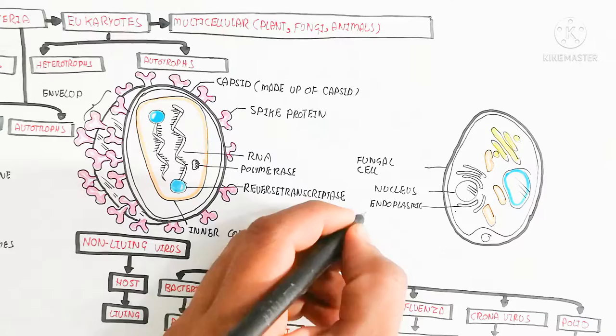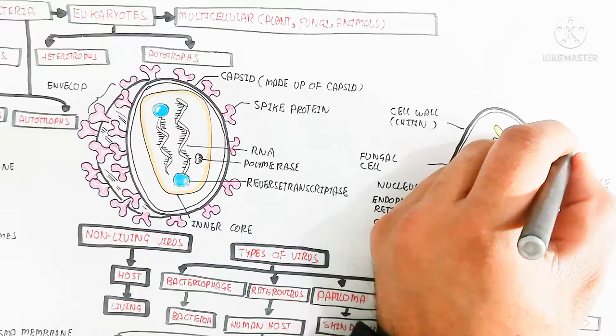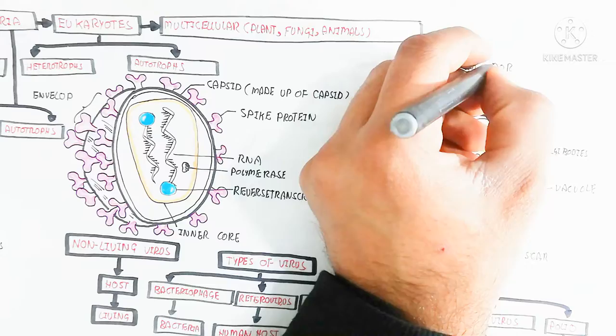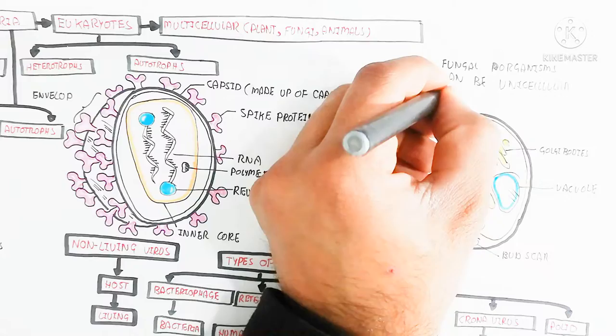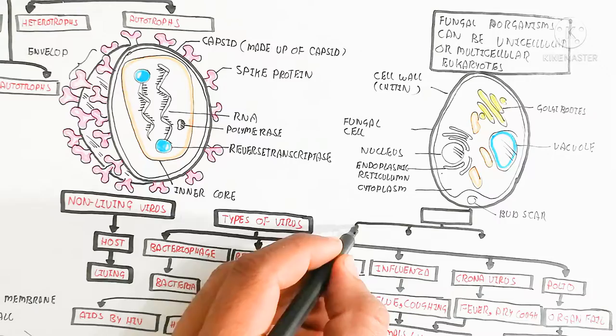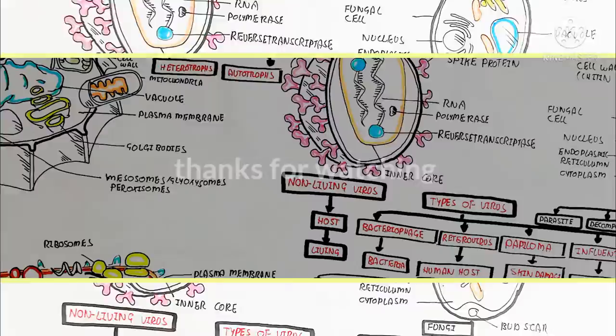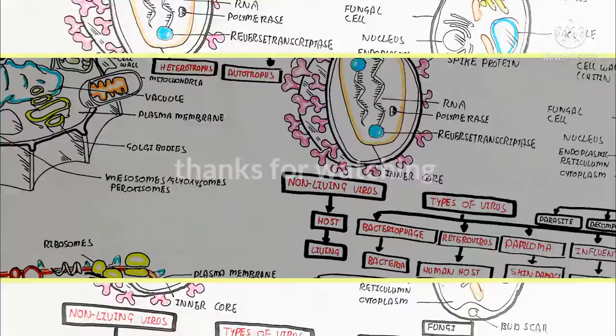Here is the fungi — the fungal cell is unicellular in the case of yeast, while multicellular in the case of mushroom. The cell wall is made up of chitin, and inside are Golgi bodies, vacuoles, oil droplets, and bud scars. Reproduction is basically asexual reproduction as well as sexual reproduction. The cell wall is made up of chitin, and the cell contains a nucleus, endoplasmic reticulum, and cytoplasm. Fungi can be parasites, decomposers, or in symbiosis — for example, lichen, which is a symbiotic relationship between algae and fungi.